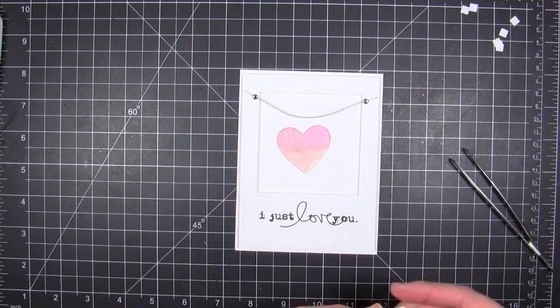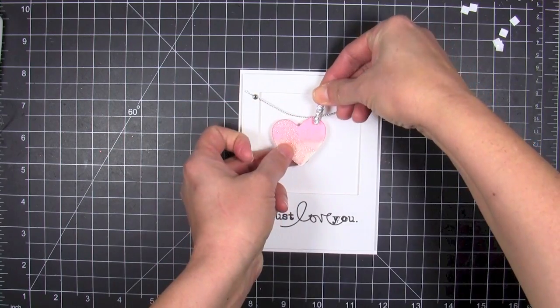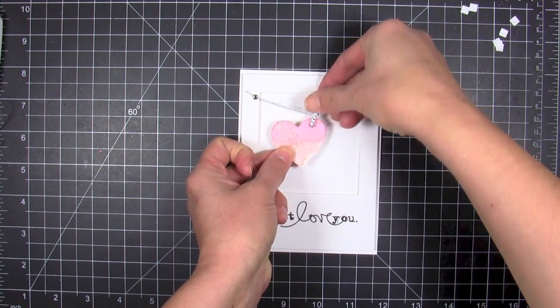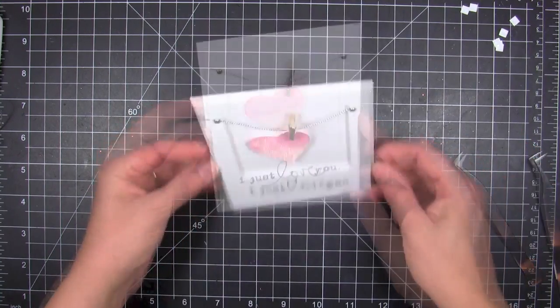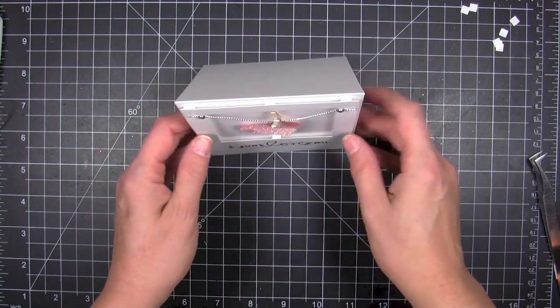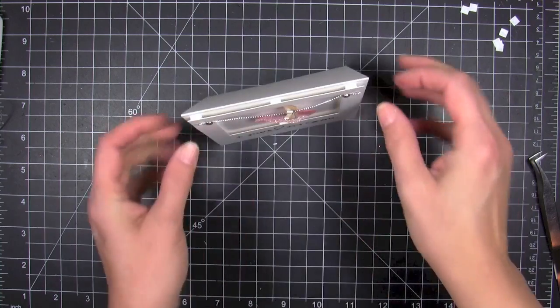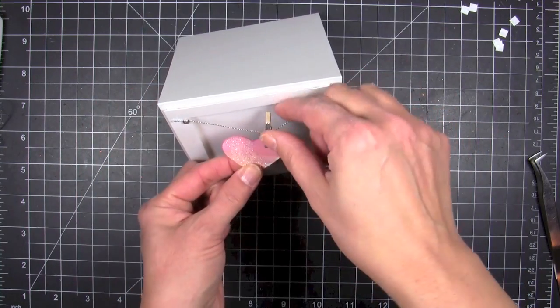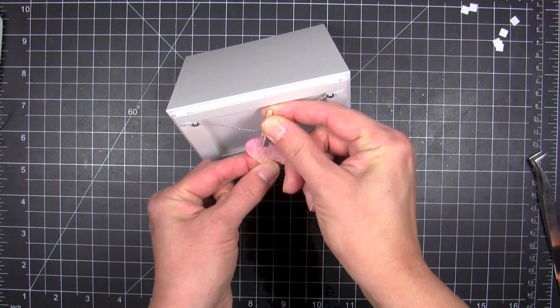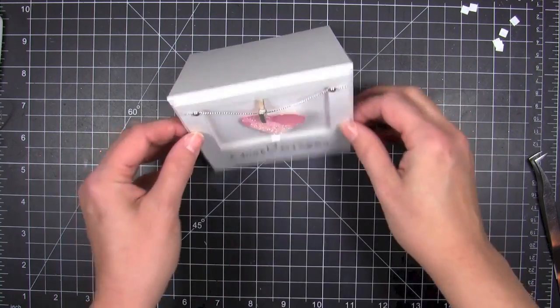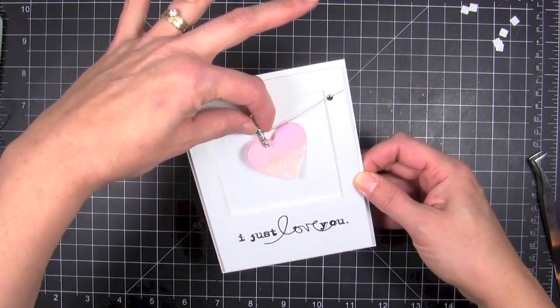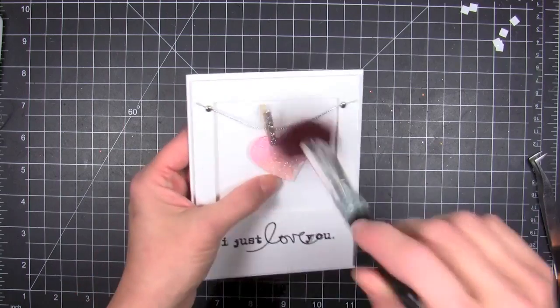I'm gonna take that little clothespin and suspend my heart. You can kind of play around with your placement there. I went ahead and propped the card upright so I could mess around with how I wanted to suspend the heart. You can kind of play around with that until you get it in the position that you like. Once I was done with that, the card was pretty much finished.